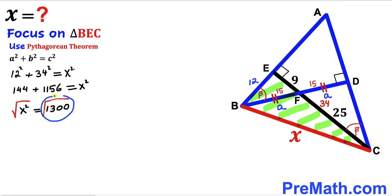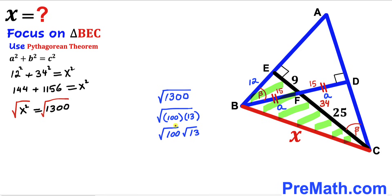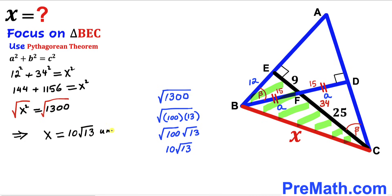Taking the square root on both sides: the square root of 1300 can be written as the square root of 100 times 13, which splits into the square root of 100 times the square root of 13. That simplifies to 10 times the square root of 13, so our x value turns out to be 10√13 units.